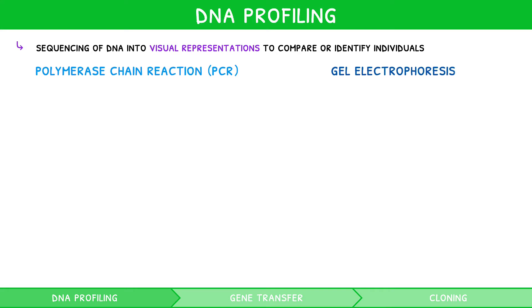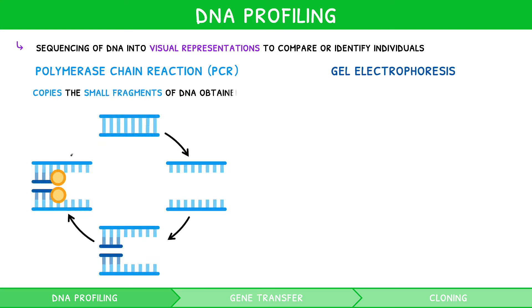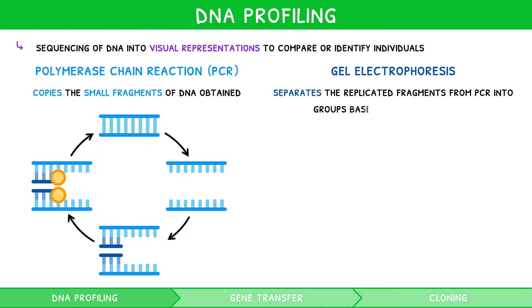PCR is used to initially copy the small fragments of DNA obtained. This process is covered in detail in our fourth video of our IB Biology Topic 2 video series. Gel electrophoresis is used to separate the replicated fragments from PCR into groups based on size and charge.